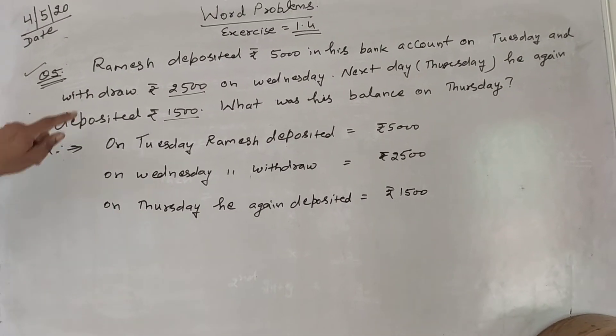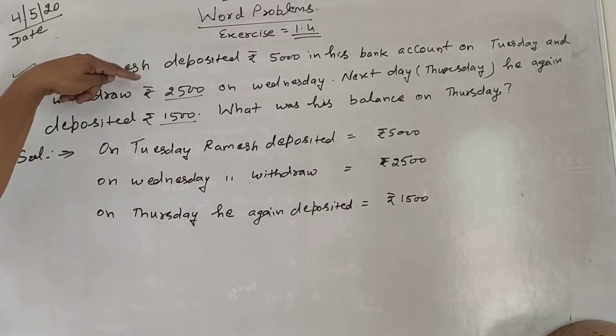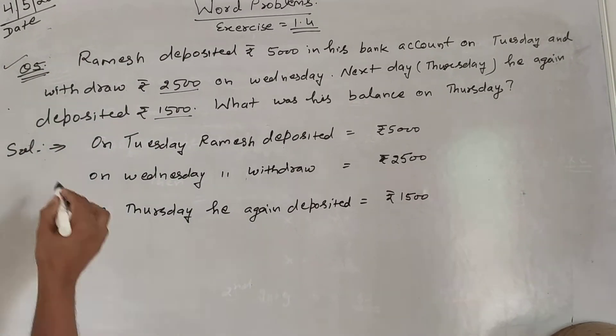When deposits are made to the bank, they are positive. When withdrawals are made, they are negative. So, see this discussion.